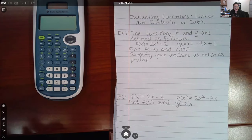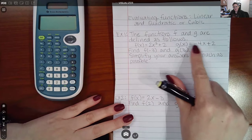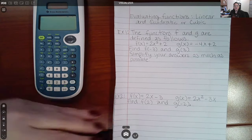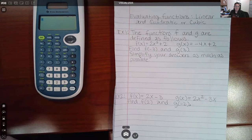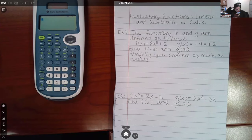They're going to give you two functions. They're going to define those two functions, right? F of x is equal to this, g of x is equal to that. And then they're going to ask you to find two specific values. And of course, they want you to simplify your answers as much as possible. That is standard practice when dealing in mathematics.